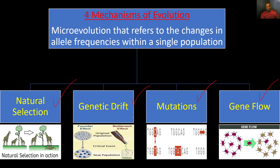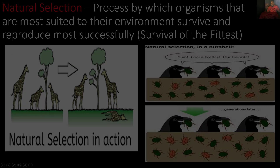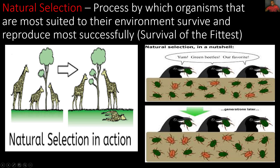We'll first start with natural selection. Natural selection is the process by which organisms that are most suited to their environment survive and reproduce most successfully. This is also known as survival of the fittest. Let's take a look at this first picture.